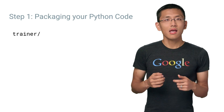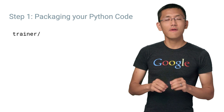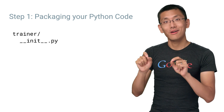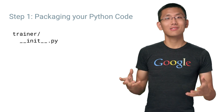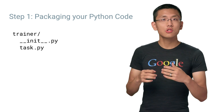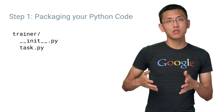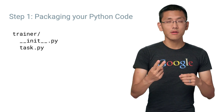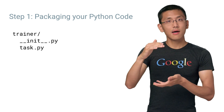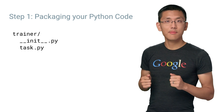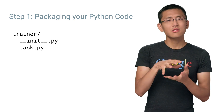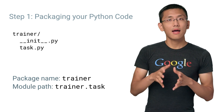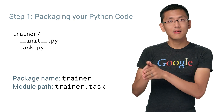Let's call it trainer, and place an empty file, `__init__.py`, alongside task.py. So our final file structure is made up of a folder called trainer containing two files: the __init__.py and the task.py files. While our package is called trainer, our module path is trainer.task.